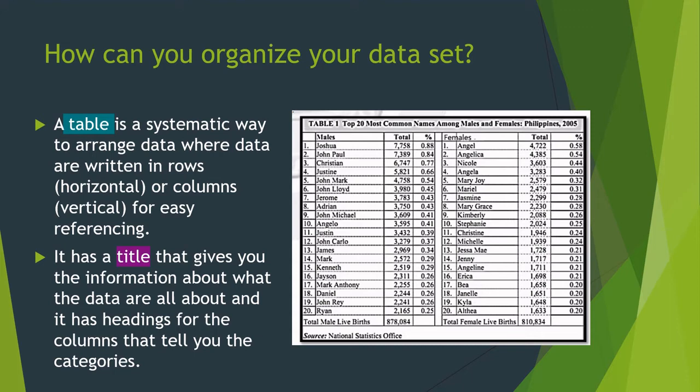How can you organize your data set? We need a table. A table is a systematic way to arrange data where data are written in rows and columns for easy referencing. It has a title that gives you information about what the data are all about, and it also has headings for the columns that tell you the categories.